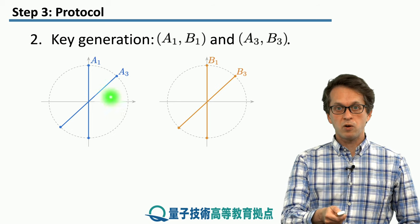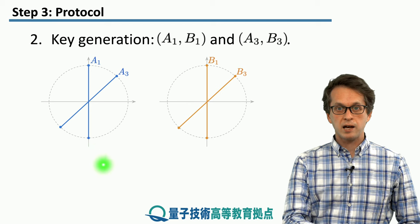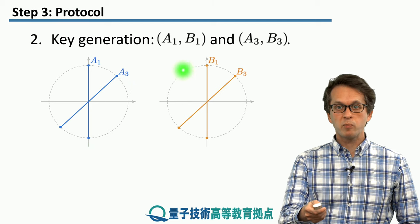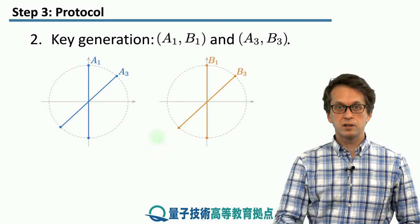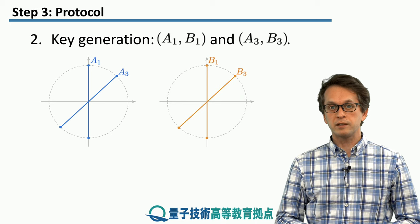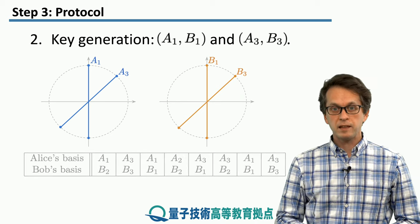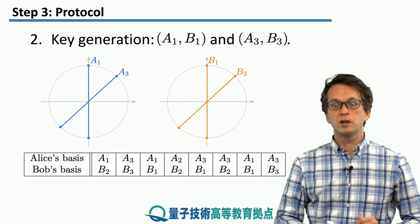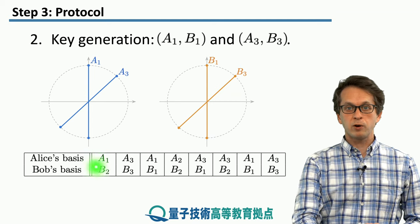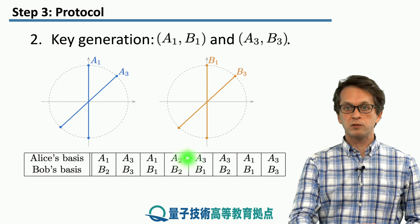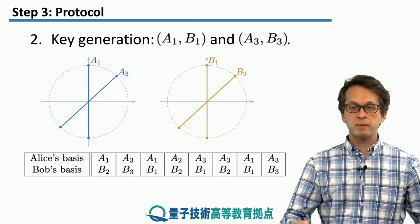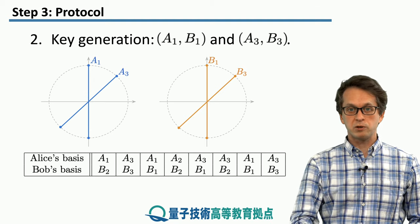To establish the key, Alice measures either in A1 or A3, and Bob measures in B1 or B3. They randomly measure their multiple copies of entangled states, then exchange information about the basis of their measurements. For example, Alice has choices like A1, A3, A1, A2, A3, A3, A1, A3, and so on, and Bob has some other random string of measurement choices.